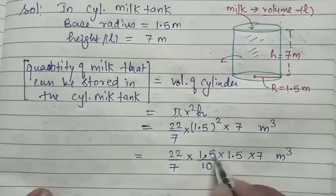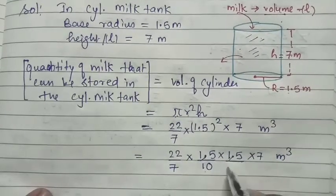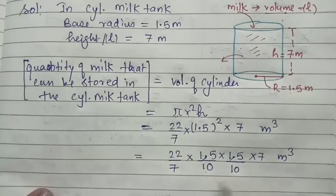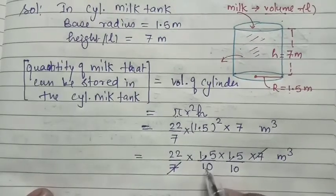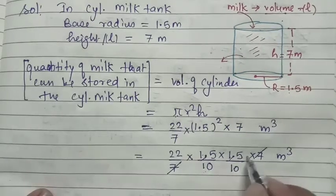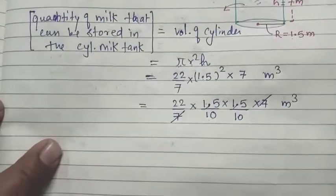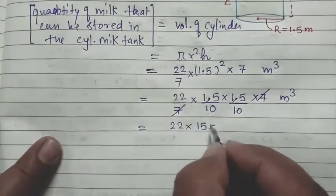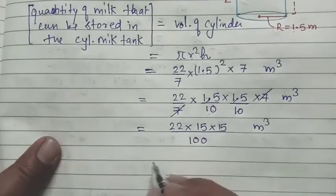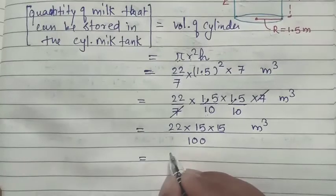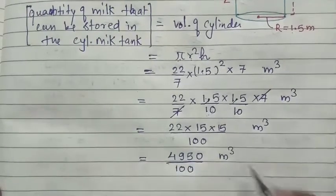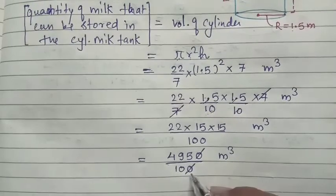Ab point hatayenge — point ke baad ek digit hai, toh niche 10 jayega. So 1.5 becomes 15/10. Similarly dono 1.5 ko 15/10 likh sakte hain. 7 aur 7 cancel ho jaate hain. Baki sab multiply karo: 22 × 15 × 15 upar, aur 10 × 10 = 100 niche. Yeh aata hai 5950/100 meter cube.